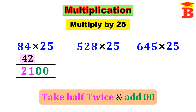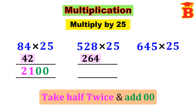Next let us multiply 528 into 25. We follow the same method: take half twice and then add double 0 at the back. Taking half of 528 we get 264. Again take half of 264, we get 132. So we take half twice and then add double 0 at the back. So the answer is 13200.